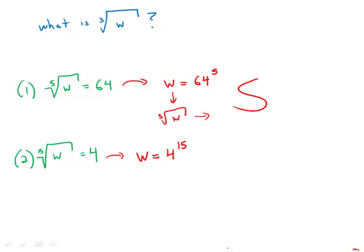Again, we could multiply 4 out 15 times if we had enough time. We could actually find that number. Once we have that number, we could take the cube root of that number, and that would answer the question.